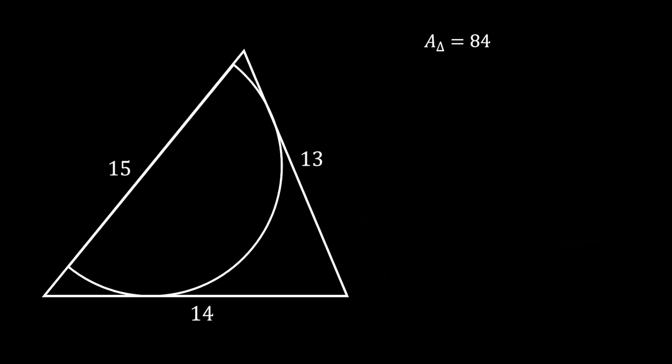Now, we will continue by labeling the vertices of our triangle as A, B and C. We can also label the center of our half circle as O.